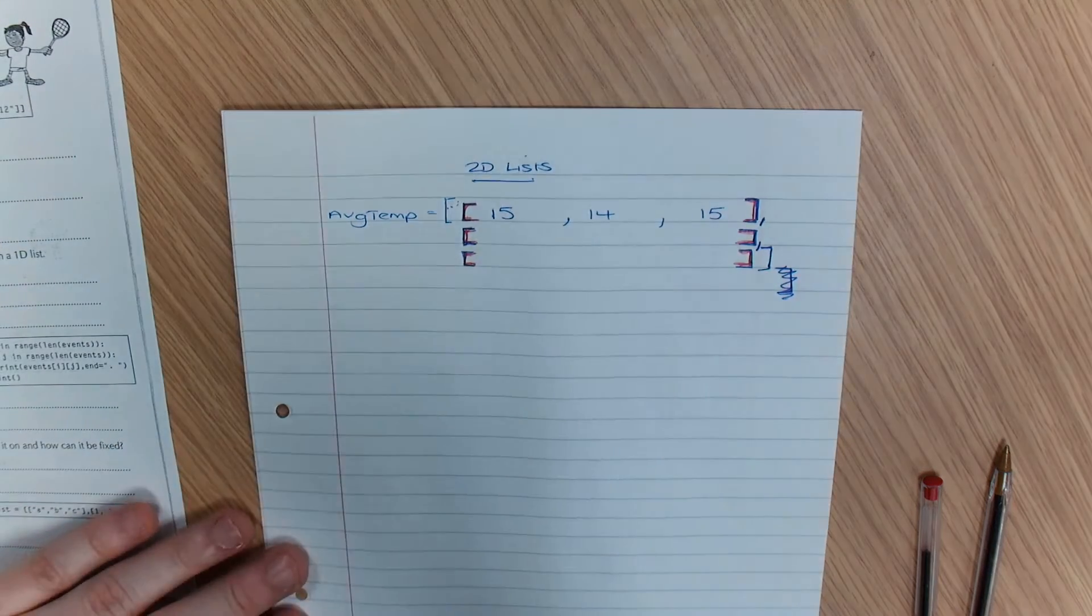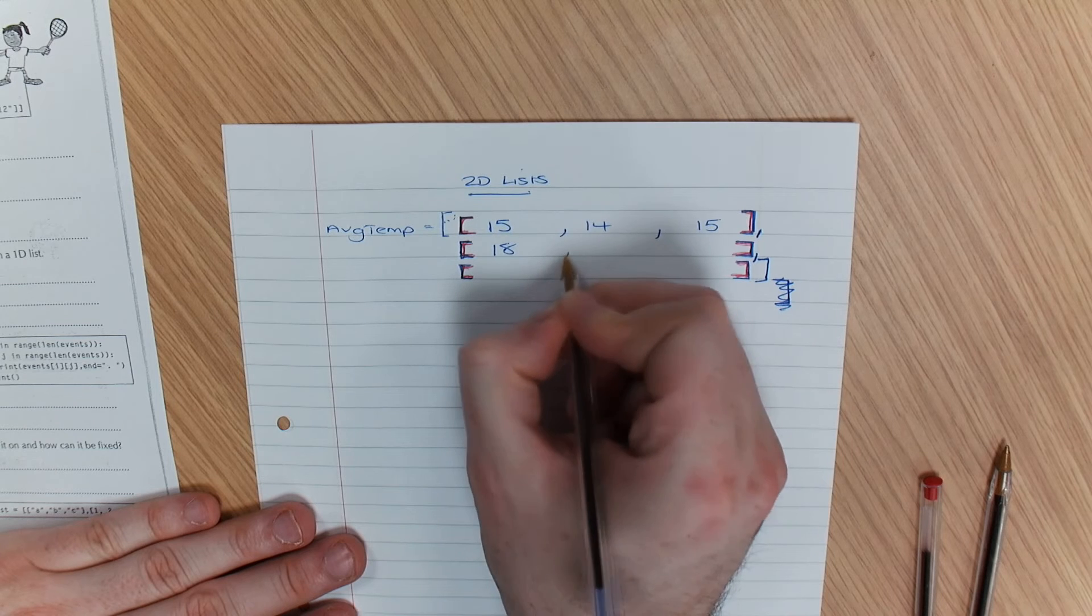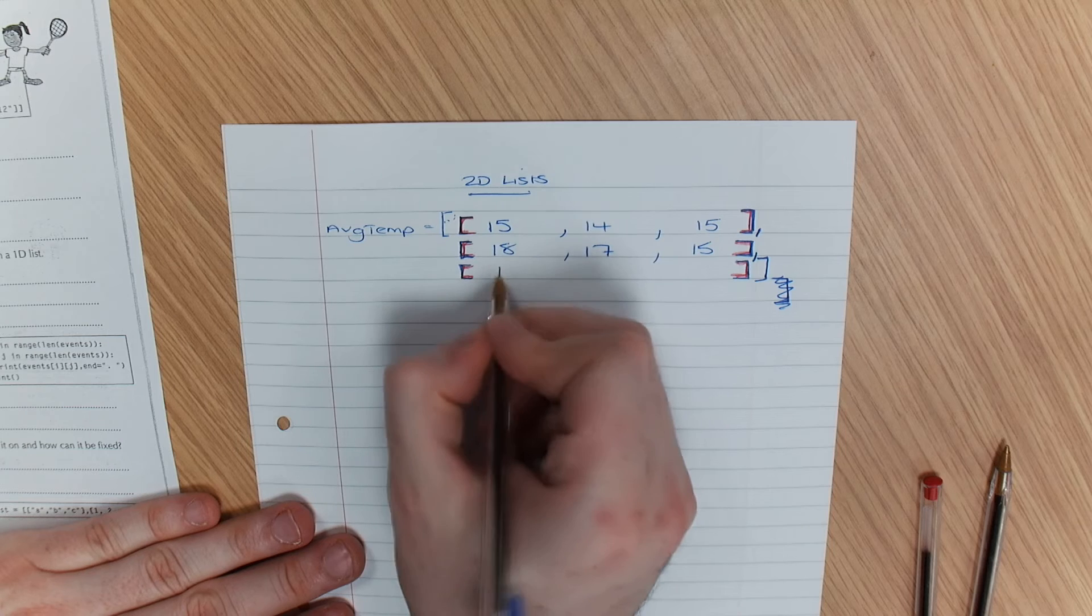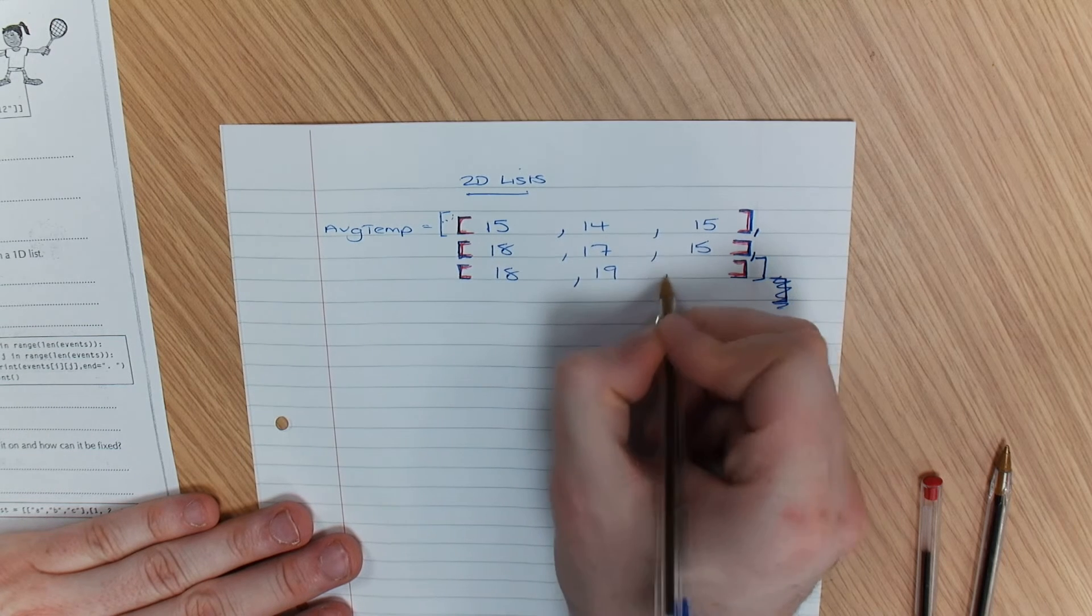But I've got multiple rows in this. I've got 18, 17, 15 again, 18, 19, and we're going to do 17.